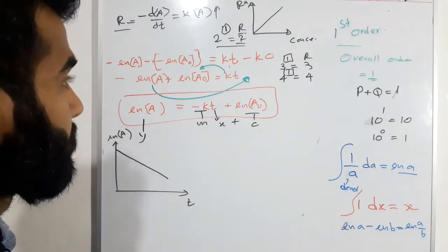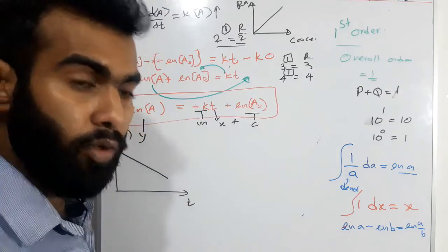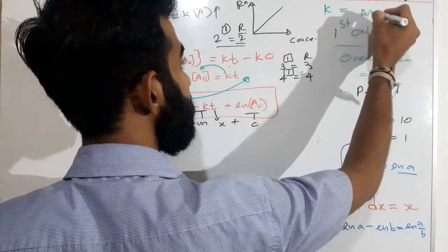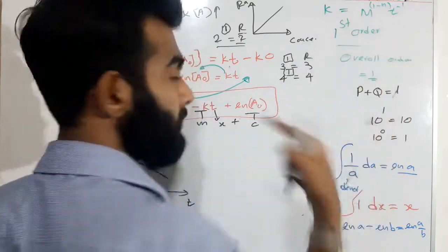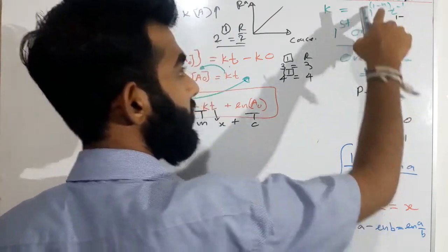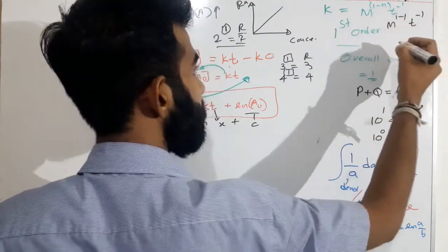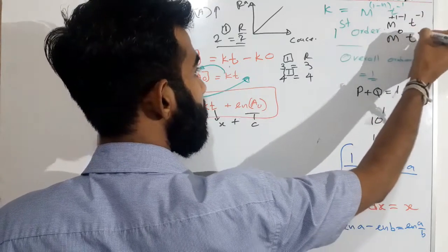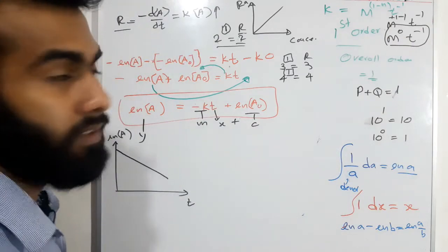What about the units of the rate constant? You have to remember the common equation: units of K equals molarity to the power (1 minus n) times T to the minus 1. In first order reactions, n is 1, so M to the power (1 minus 1) is M⁰, which equals 1. Therefore the units of rate constant of a first order reaction are T⁻¹.